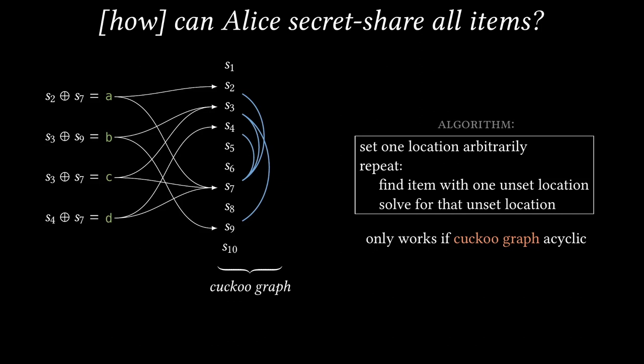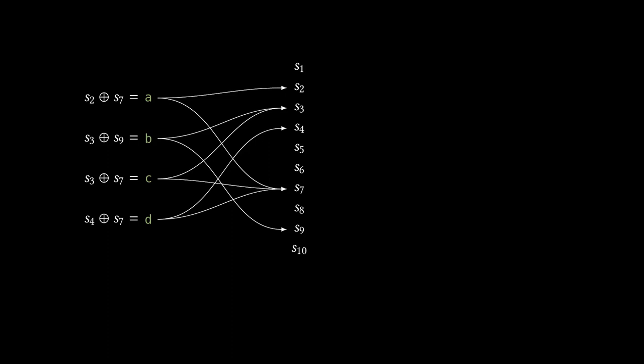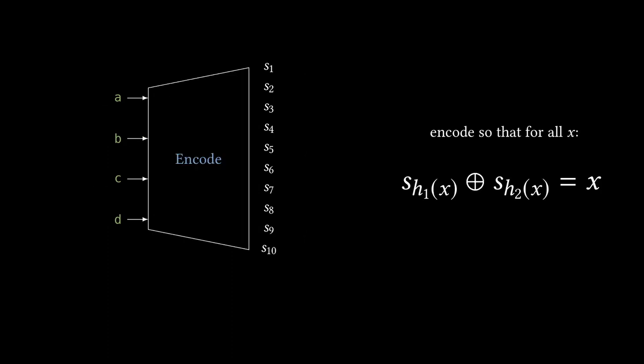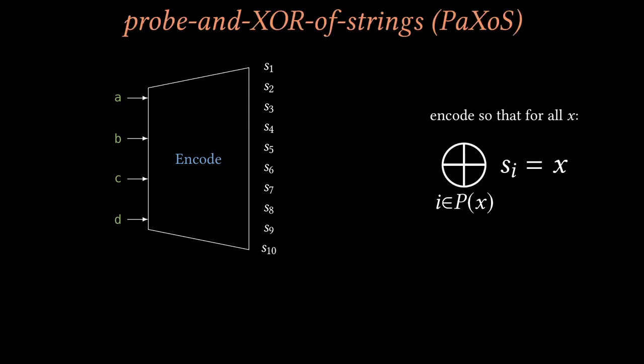So if this process doesn't work in general, what do we actually do in our protocol? Well, we slightly generalize the problem. Abstractly speaking, the protocol is asking Alice to generate a vector S that satisfies a linear constraint for each of her items. That linear constraint involves the XOR of two positions of the vector, corresponding to those two bins associated with that item. However, the protocol still works if we consider constraints that are the XOR of more than two positions in the vector. We call this generalized data structure problem a probe and XOR of strings, or Paxos for short. In the simplified version that I've shown you so far, the probe positions for an item X were H1(X) and H2(X), but the more general Paxos allows for any set of probe positions for each item. In order for our protocol to work, we need the corresponding set of constraints to actually admit a solution. The simple Paxos that I showed you, with only two probes per item, does not lead to a satisfiable set of linear constraints often enough to be useful.